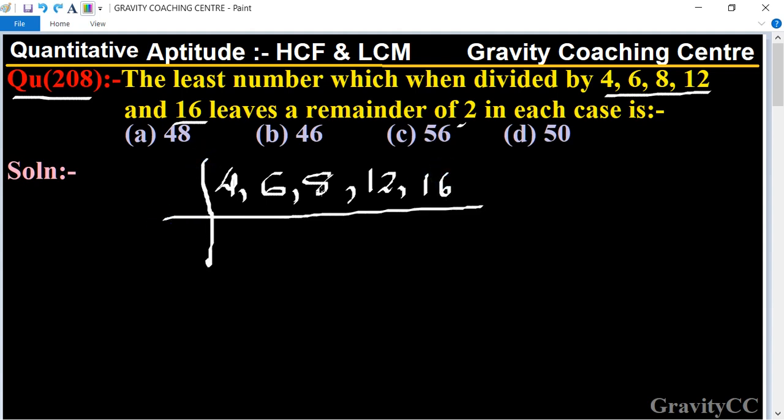So here 8 is cancelled by table of 4, and 12 is cancelled by 6, and 16 is cancelled by 8. So now we take the table of 4: 4, 3, and 4. Therefore LCM equal to